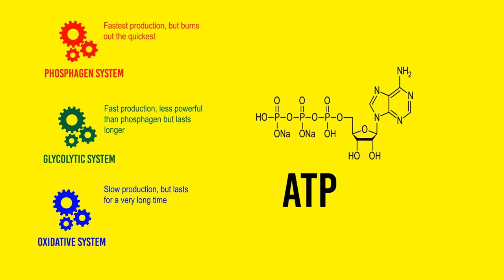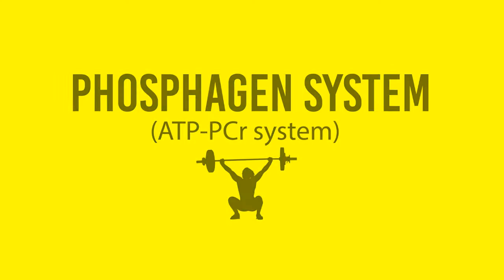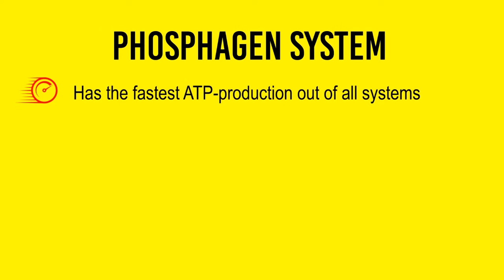Think of the three energy systems as different factories that produce the same product — ATP — but with different methods. They all have their pros and cons, which we'll go into later. Let's start with the first factory: the phosphagen system, otherwise known as the ATP-PCR system. This is our fastest factory. It produces ATP faster than any other energy system because it only requires one enzymatic reaction. However, it burns out quickly because our phosphagen stores are limited.